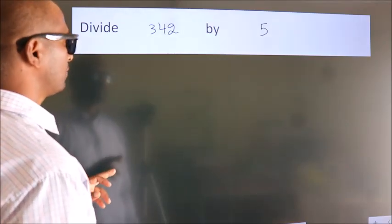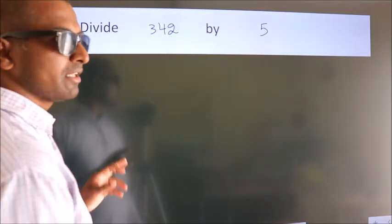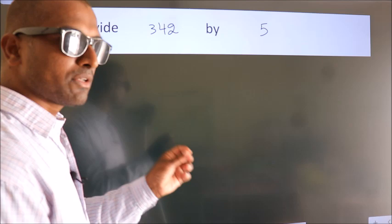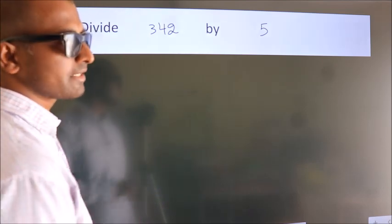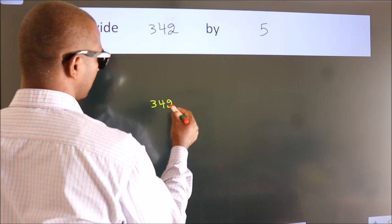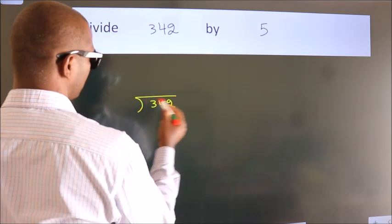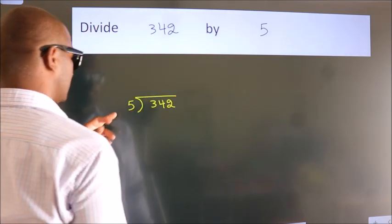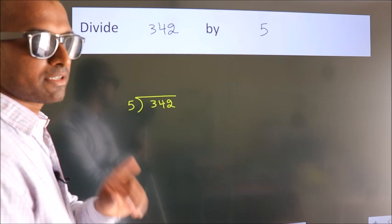Divide 342 by 5. To do this division, we should frame it in this way. 342 here, 5 here. This is step 1.